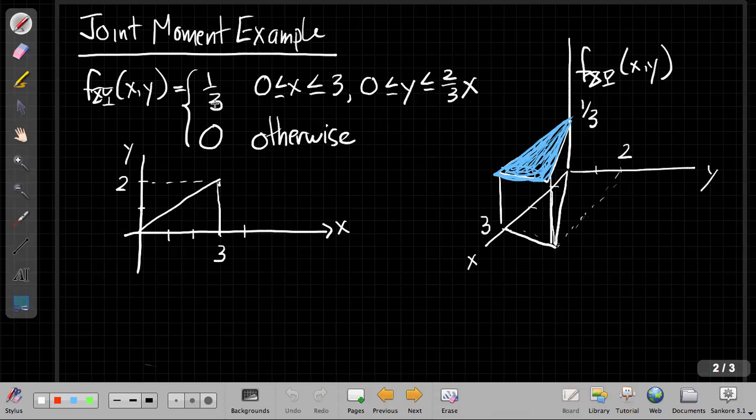I have the problem already specified. We're talking about a joint PDF that's one-third for the region where X goes from zero to three and then Y for each X goes from zero to two-thirds X. So the region has this triangular footprint shown here. I was not brave enough to do this live on camera, so I had to spend a little time before we started to make a perspective drawing where we're saying basically that we're talking about this blue triangle here with height one-third.